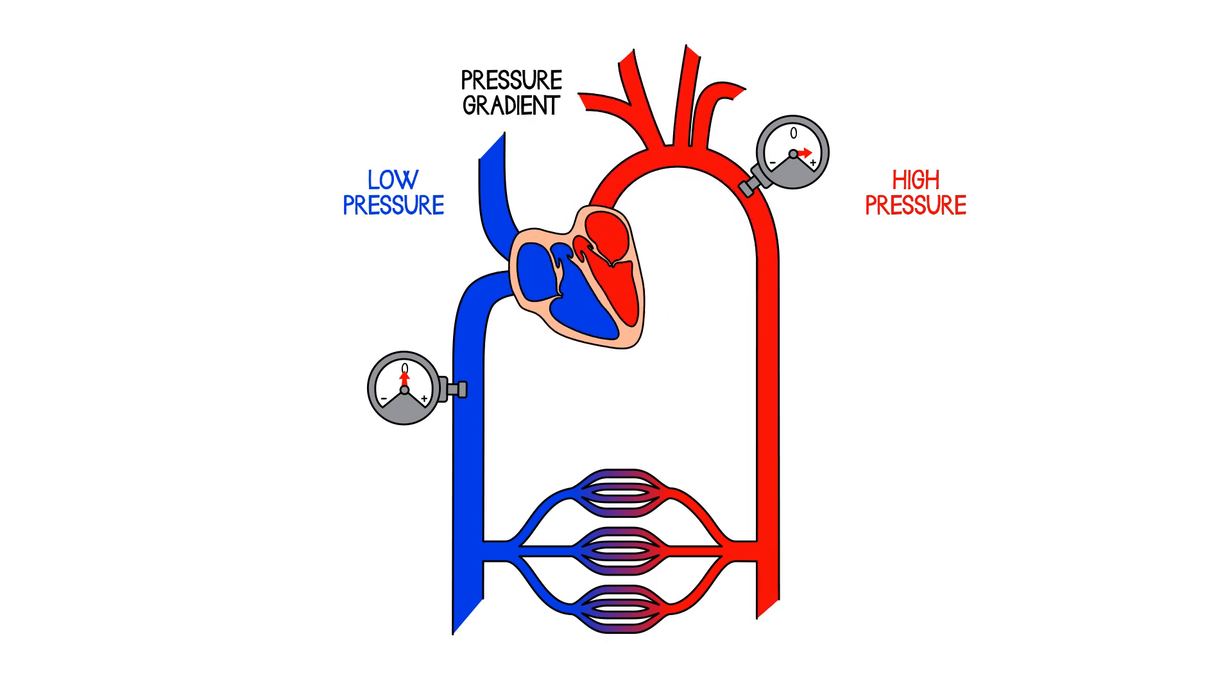So the heart is generating that pressure gradient. It's generating it ultimately using energy, of course. It needs oxygen. It needs a fuel supply in order to achieve that. But once it's achieved that gradient, blood flows around the circulation.